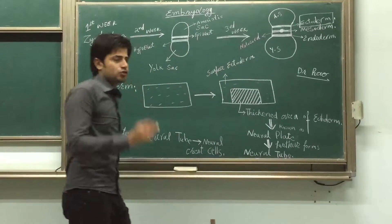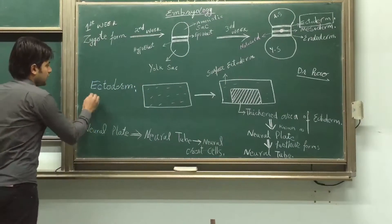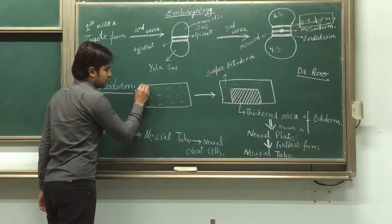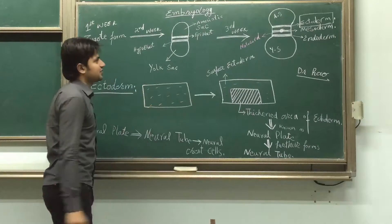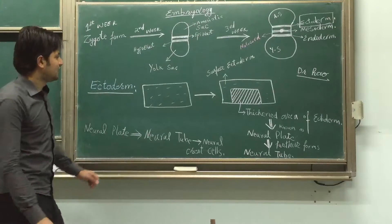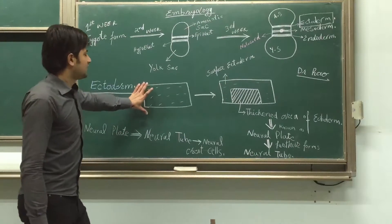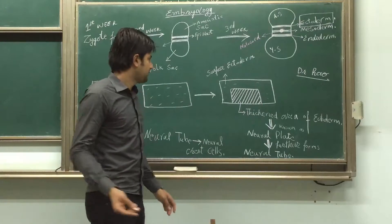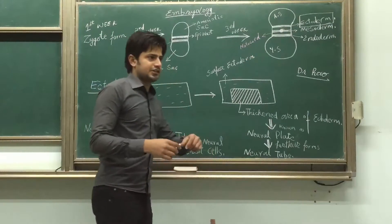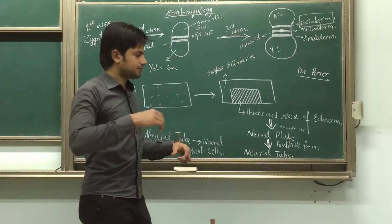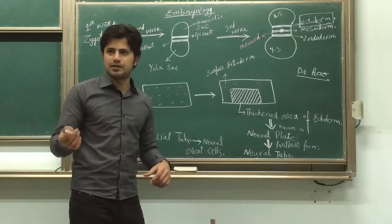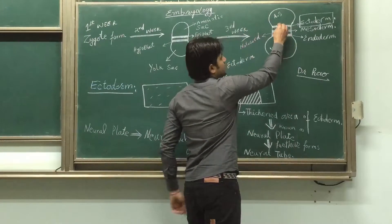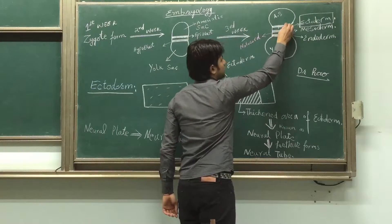First of all, ectoderm. I have chosen a small piece of ectoderm here. After some time, the notochord secretes some type of chemicals or some matter, and some part of the ectoderm thickens.